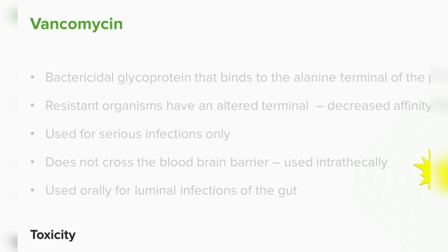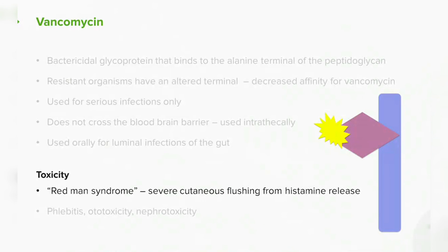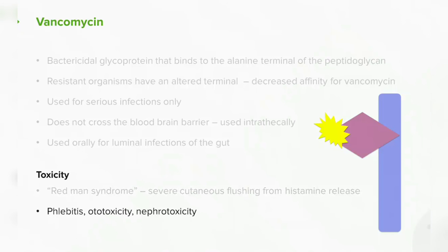The important toxicity to remember with vancomycin — and one you'll likely be tested on — is red man syndrome. This term applies equally to men and women. It causes severe cutaneous flushing from histamine release, a dramatic and noticeable reaction that can look like a severe allergy but is actually a histamine release rather than a true allergic response. Vancomycin can also cause phlebitis, ototoxicity, and nephrotoxicity, making it a potentially toxic agent.